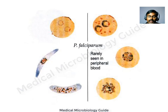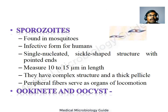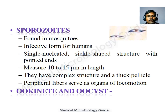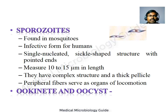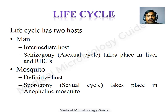Sporozoites are the infective form for human beings, found in the mosquito. They are single-nucleated, sickle-shaped structures with pointed ends, measuring 10–15 micrometers, with a complex structure and thick pellicle that helps them survive in host tissue. They have peripheral fibers serving as organs of locomotion to traverse dermal tissue when injected into skin. The ookinete is present in the midgut of the mosquito, and oocysts are formed in the body cavity of the mosquito.